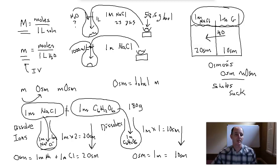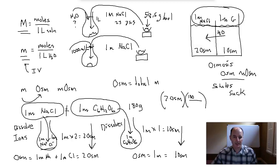In order to determine milliosmolality, we're just doing a metric system conversion. So if I have two osmols of something and I want to determine how many milliosmols that would be, I multiply by 1,000 milliosmols per one osmol — because that's what milli represents. Osmols cancel, and two times one thousand gives a two osmol concentration equal to 2,000 milliosmols.